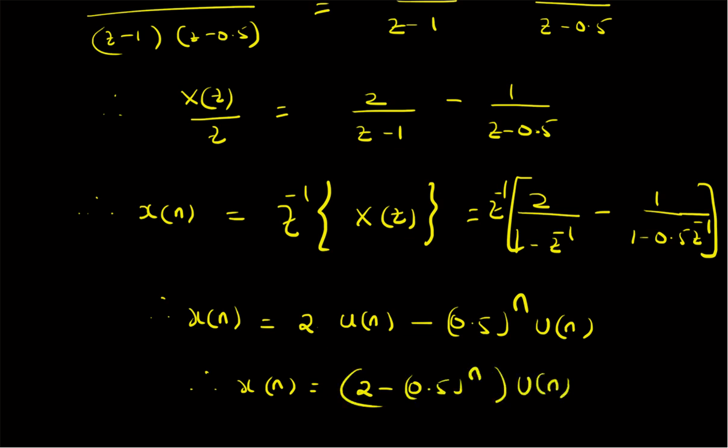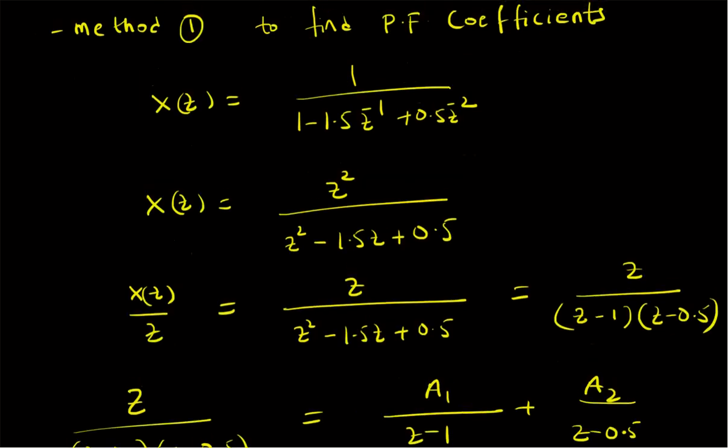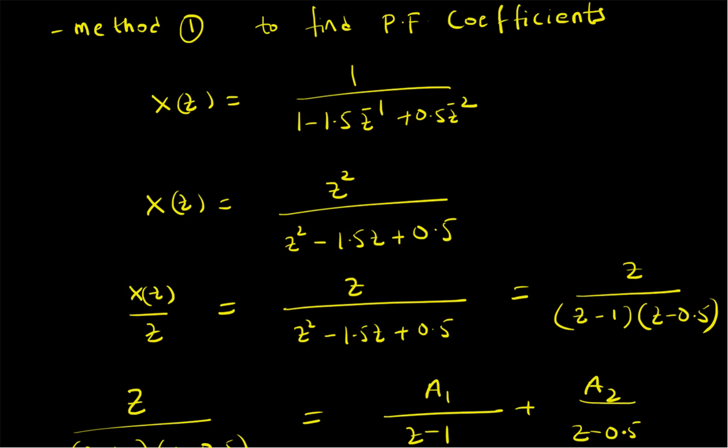To summarize, we looked at an example illustrating the evaluation of the inverse z-transform using the partial fractions approach, where we used Method 1 for finding the partial fraction coefficients. Given X(z) = 1/(1 - 1.5z⁻¹ + 0.5z⁻²), we write it as a rational polynomial with positive powers of z: X(z)/z = z/(z² - 1.5z + 0.5), and identify the poles as z = 1 and z = 0.5, factoring the denominator as (z - 1)(z - 0.5).